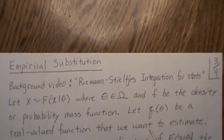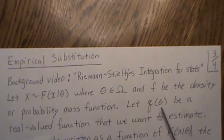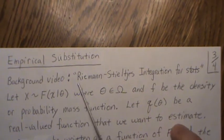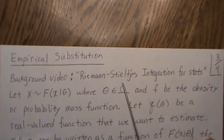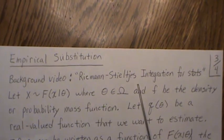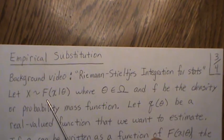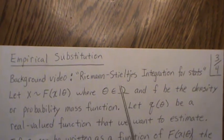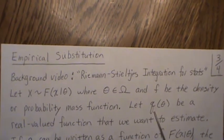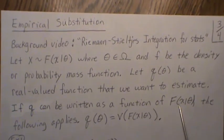Frequency substitution is a specific case of empirical substitution. You should watch the background video on Riemann-Stieltjes integration for statisticians — it's a useful methodology to have in your statistical tool bag. Now let X be distributed with CDF F with parameter theta in parameter space omega, and let f be the density or probability mass function. Q is a real-valued function of what we want to estimate.